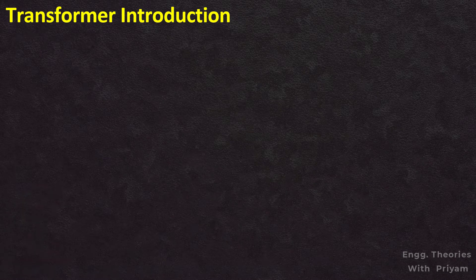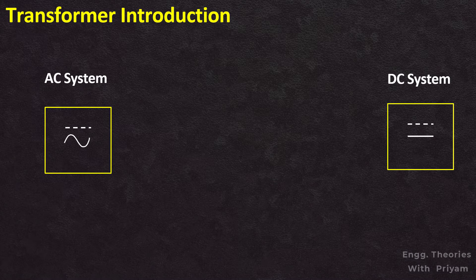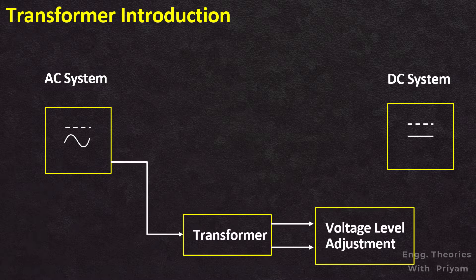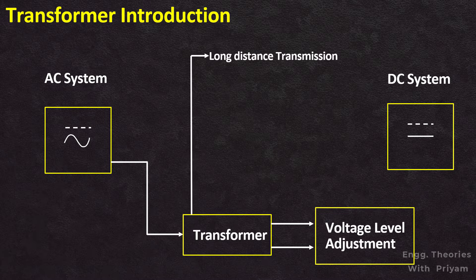From this lecture we will start the transformer. The transformer is sometimes referred to as the backbone of the electrical system. AC system is favored over the DC system for electric power generation, transmission, and distribution because the voltage level can be easily adjusted with the help of a transformer. AC system has been adopted for generation, distribution, and transmission and the use of electrical power as a result of development of the transformer.